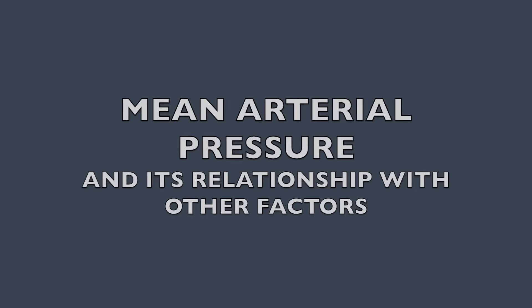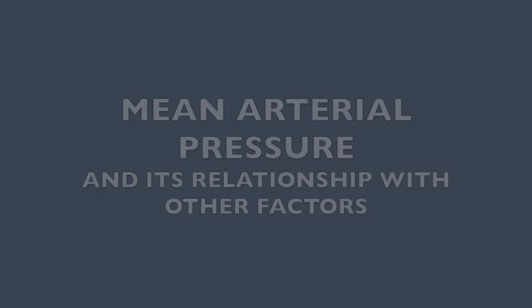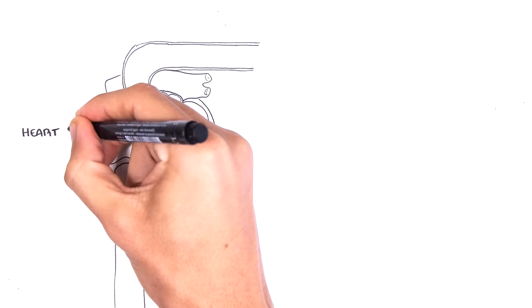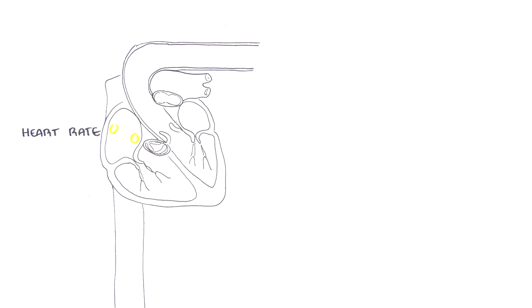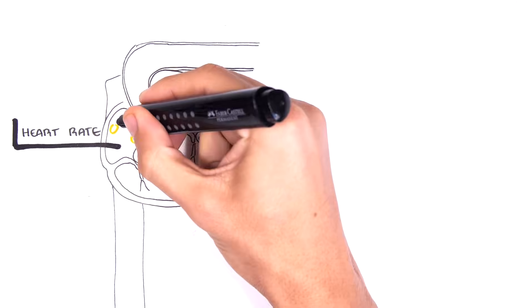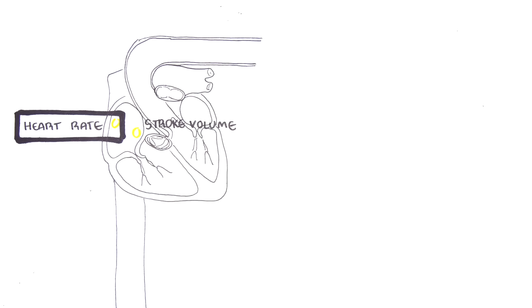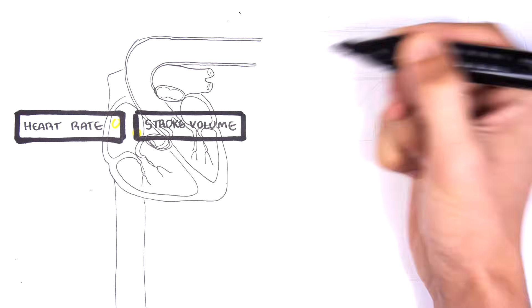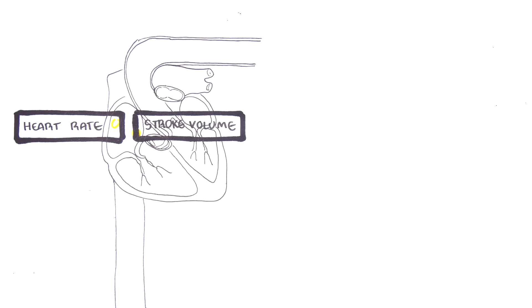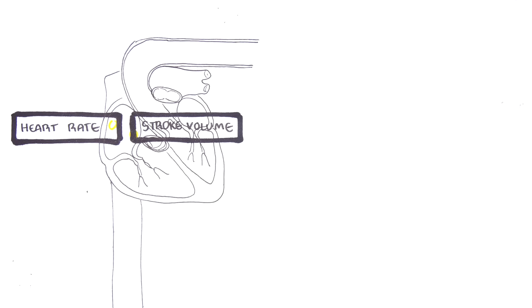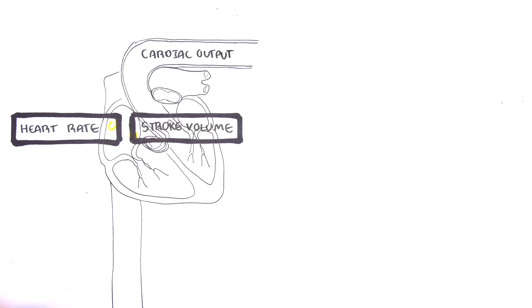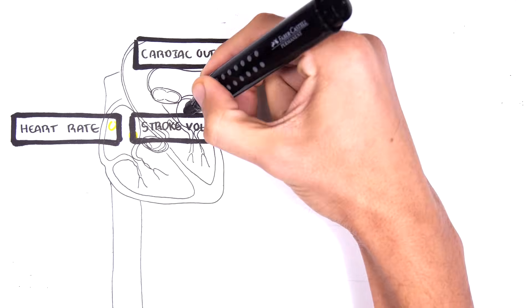In this video we're going to talk about mean arterial pressure and its relationship with other factors such as cardiac output. Here we have a diagram of the heart. Two factors are used to calculate your cardiac output: your heart rate, which is your conduction system, and your stroke volume — the amount of blood ejected by the heart with each beat. Heart rate multiplied by stroke volume gives your cardiac output.